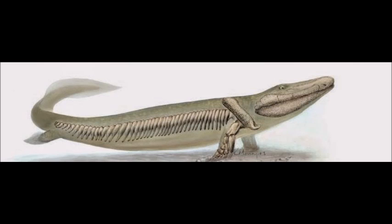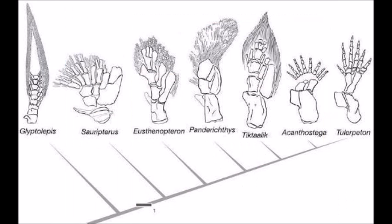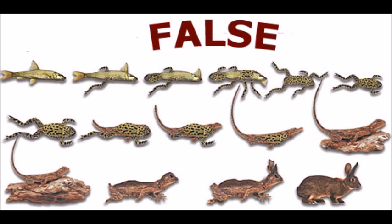Tiktaalik also had a head, neck, rib bones, pectoral girdle, and lungs like that of an amphibian. It also had features intermediate between both fish and amphibians, like having half-fish, half-tetrapod limb bones and joints, and a half-fish, half-tetrapod ear region.